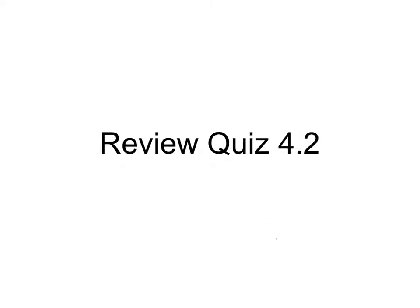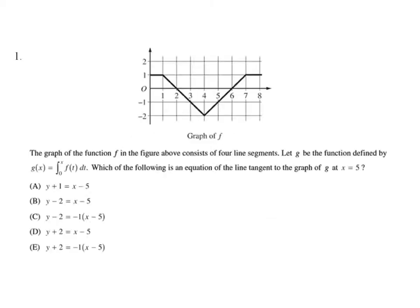This will be the solutions to Review Quiz 4.2. In our first problem, we are asked to find the equation of the line tangent to the graph of g at x equals 5. We know that g of x is equal to this part here, and the equation of the tangent line is y minus y1 equals m times x minus x1.